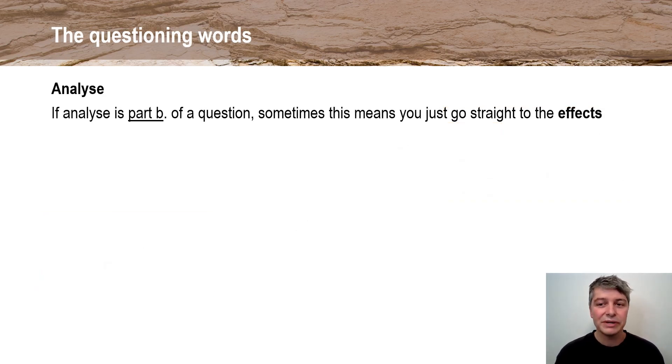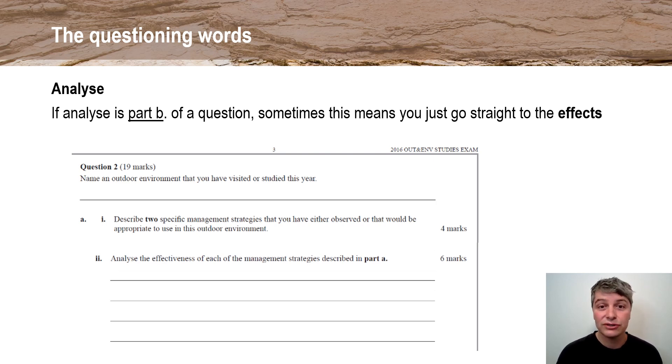One little thing to just keep in mind is when we're talking about cause and effect, sometimes you'll get questions that part A asks you to describe something and then part B gets you to analyze it. And sometimes when that happens, it might be beneficial for you to just think of analyze as part B where you just get straight to the effects. So I'll show you an example of this. So this is a question from 2016, a little bit dated, but it could still be used on the exam that you're going to sit this year. And basically what it says is part A says, describe two management strategies that you've observed or would observe that would be appropriate for your specific environment. And then it says, and that would be the cause. So unpacking those management strategies. And then it says, analyze the effectiveness of those. So then you would just get straight to, okay, what are the effects of those management strategies?